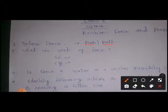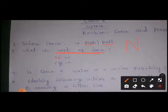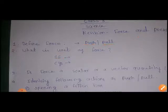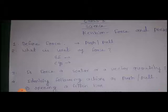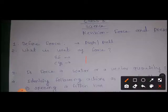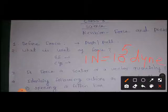Question number two: what is the unit of force? The SI unit of force is Newton, written in short as capital N. And the CGS unit of force is Dyne, written as D-Y-N-E. Also note the relation between Newton and Dyne: one Newton is equal to ten raised to the power five Dyne.